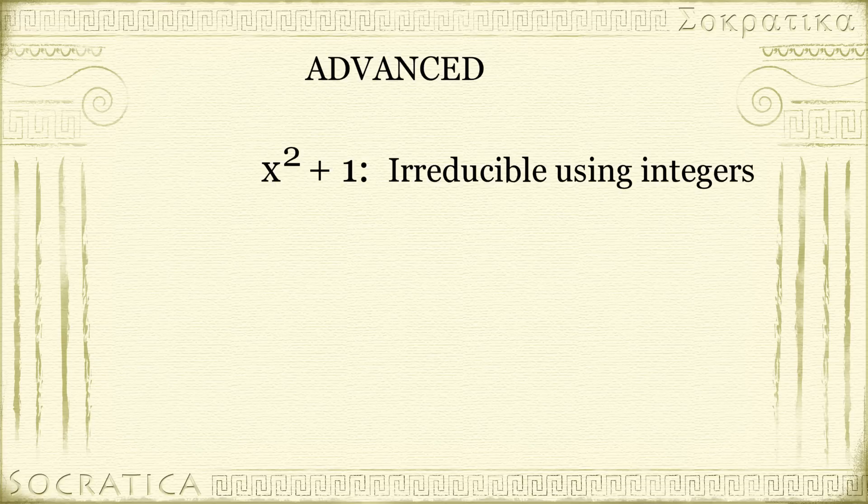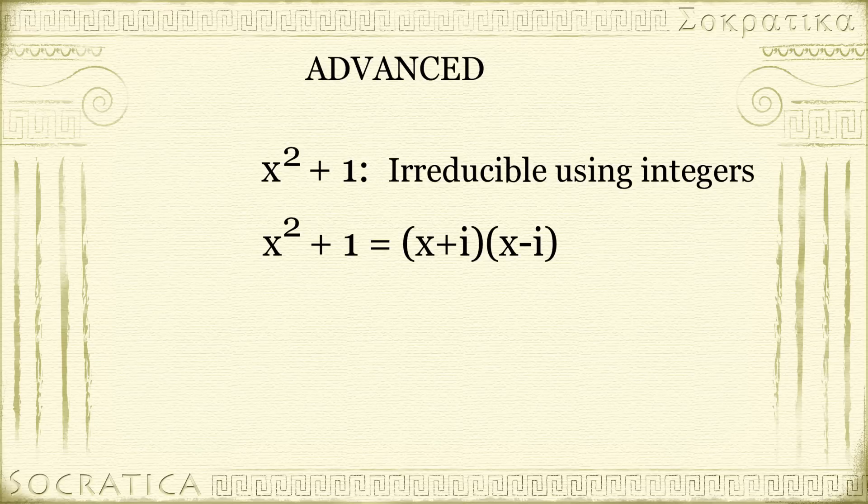But if we expand the numbers that we're allowed to work with, for example, if we're working with i, the square root of negative 1, then we can factor this. We can write x² + 1 = (x + i)(x - i), where i is the square root of negative 1.